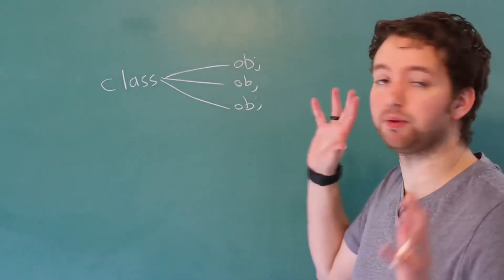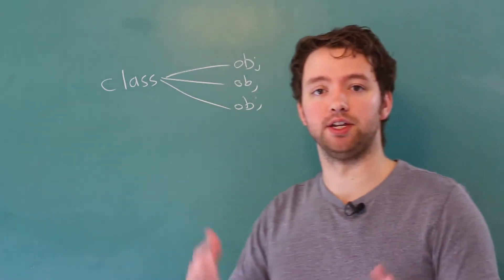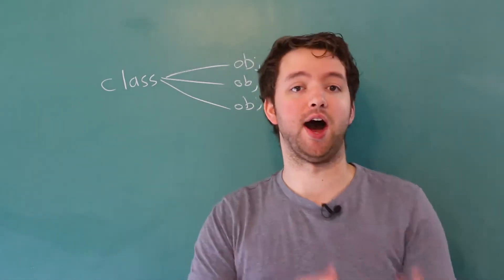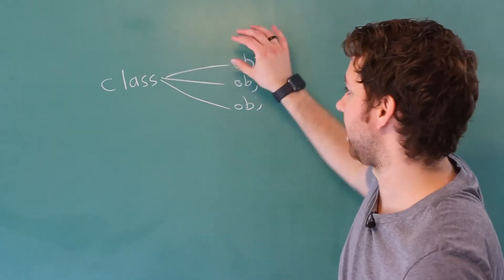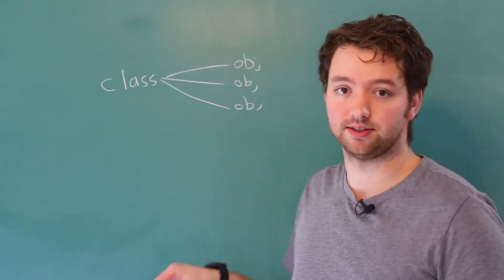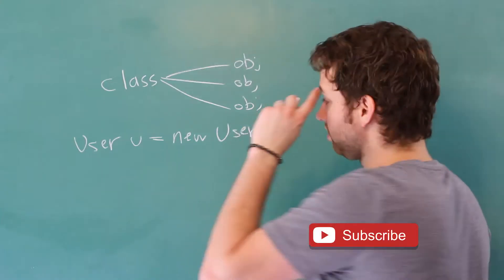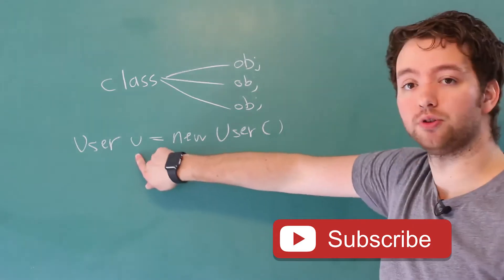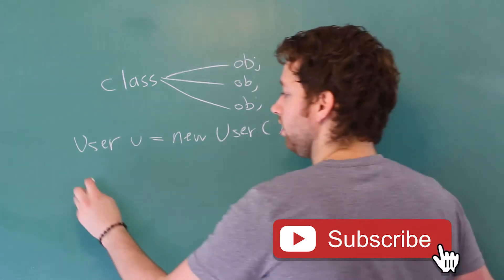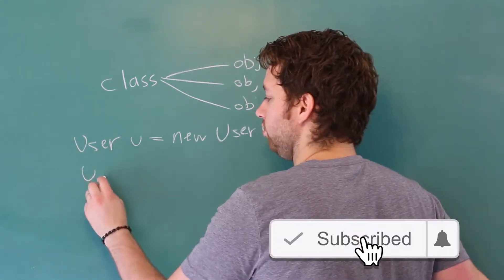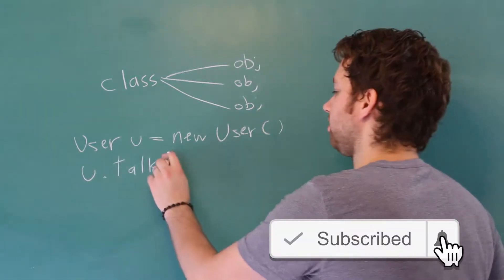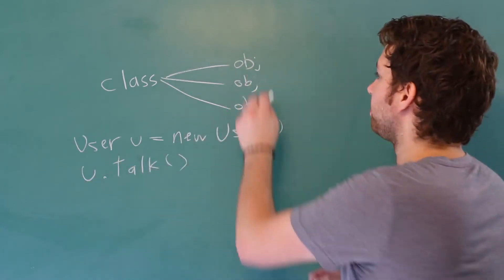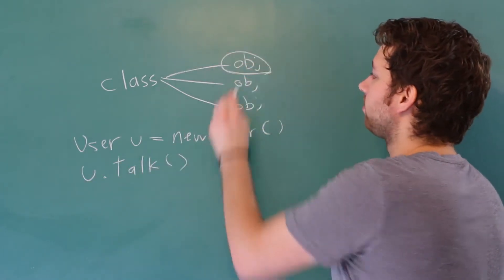So how would you do that with an instance method? By the way, an instance method is kind of the opposite of a static method because it's attached to the instances. You would do something like this — you would create an instance, call it "you", and then you would say "you.talk". It's on the instance, so one particular object.